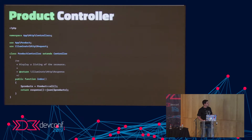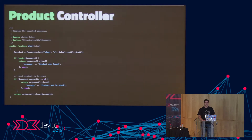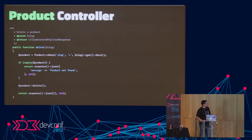Looking at our controller — the index function returns all products as JSON, which is very straightforward. The show function checks whether a product exists and whether it's in stock, and if so returns the product. Delete is very obvious — it just deletes the product. That's pretty simple.